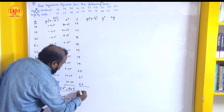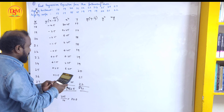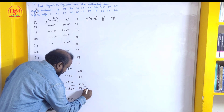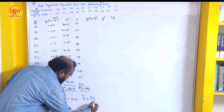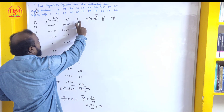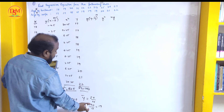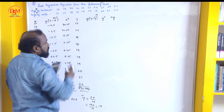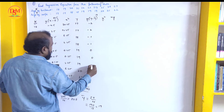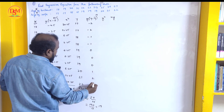Next, find the y mean. Sigma y: 17+17+18+18+19+19+19+19+20+21+22 = 190. So ȳ = sigma y / n = 190/10 = 19. Now small y = each Y value minus 19: 17−19=−2, 17−19=−2, 18−19=−1, 18−19=−1, 19−19=0, 19−19=0, 19−19=0, 19−19=0, 20−19=+1, 21−19=+2, 22−19=+3.